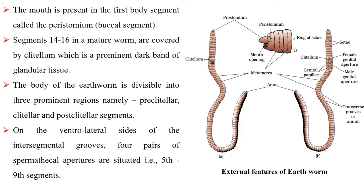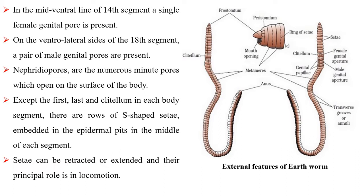In the mid-ventral line of the 14th segment, a single female genital pore is present. On the ventrolateral sides of the 18th segment, a pair of male genital pores are present. Nephridiopores are the numerous minute pores which open on the surface of the body.